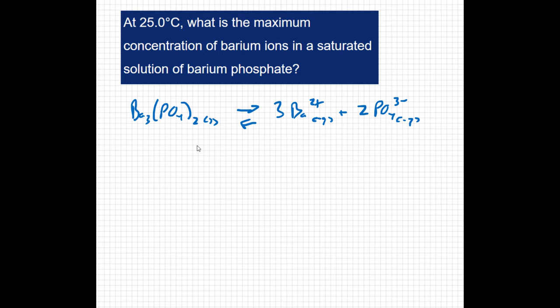So that means my Ksp equals the concentration of the barium ions cubed times the concentration of the phosphate ions squared. And we've looked up this Ksp and found it to be 6 times 10 to the negative 39.